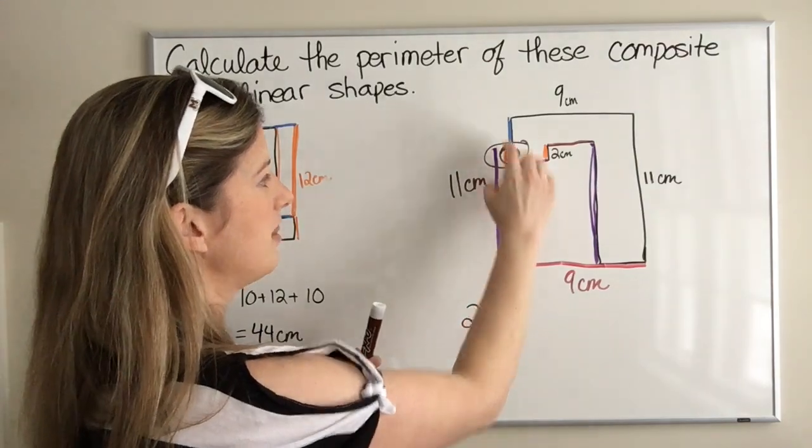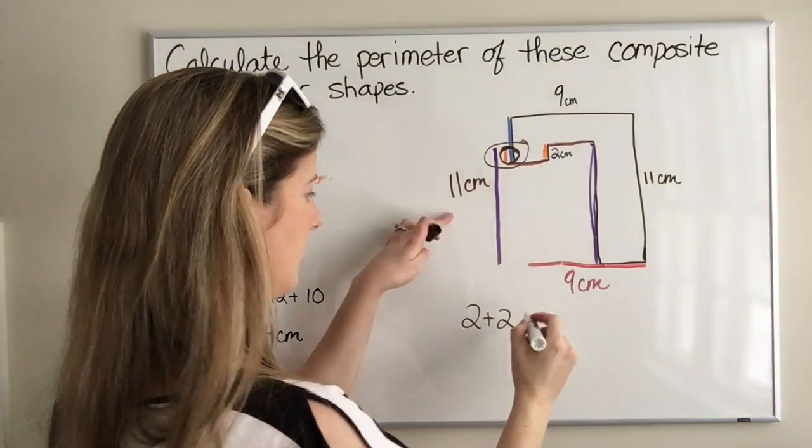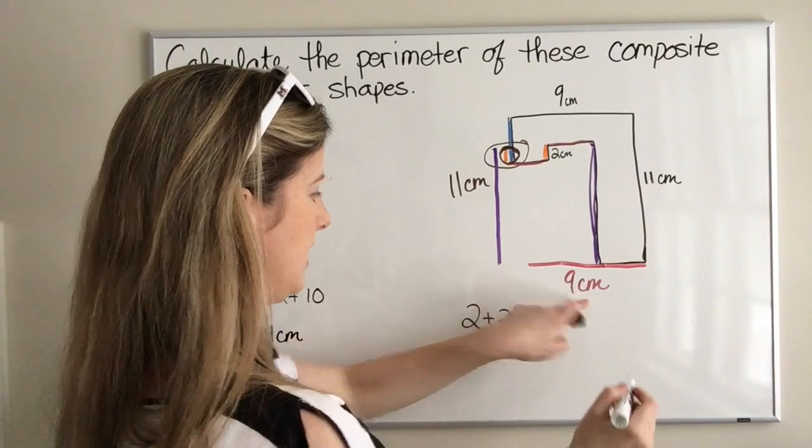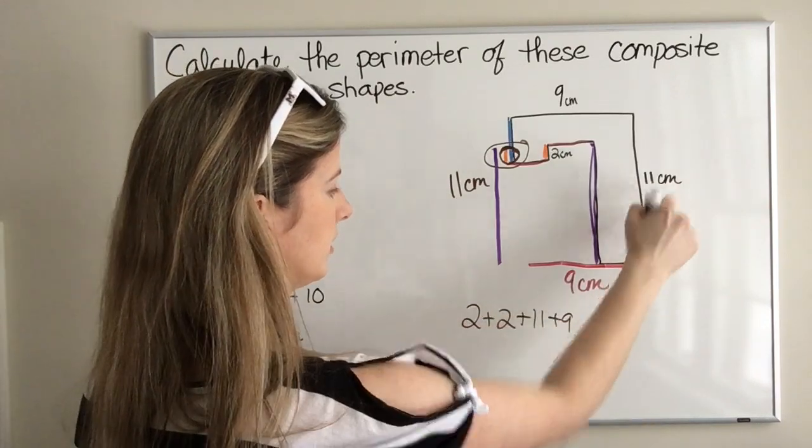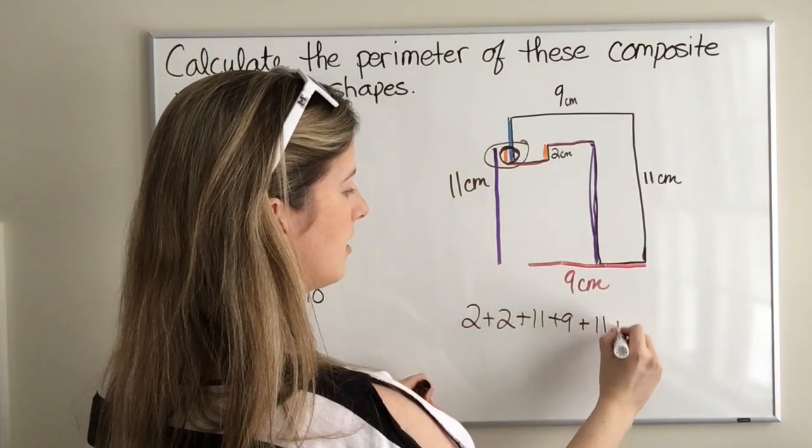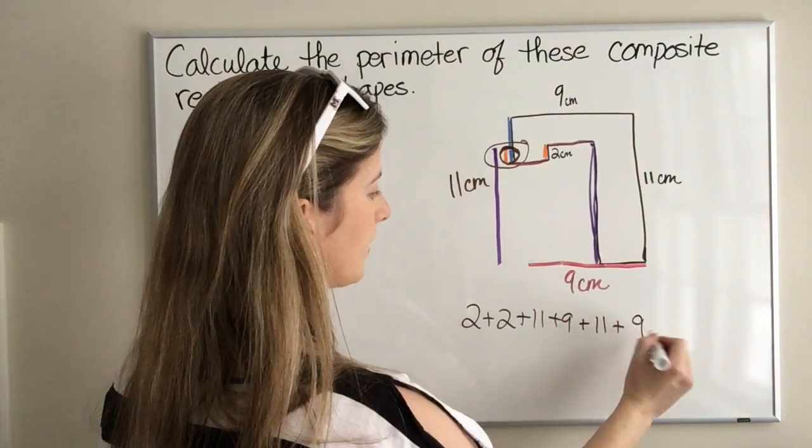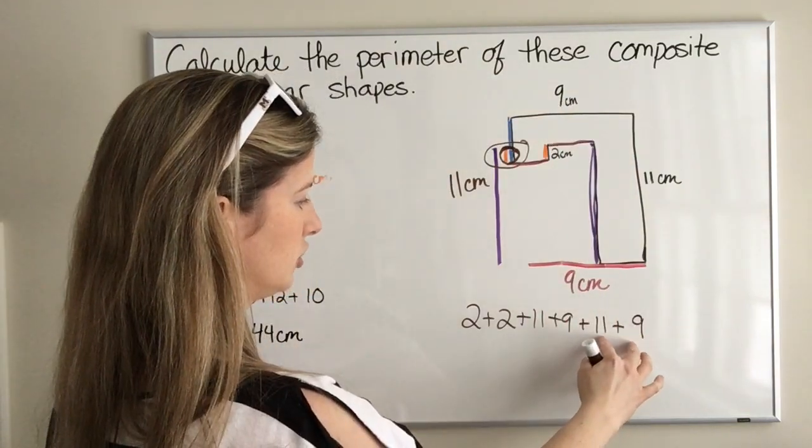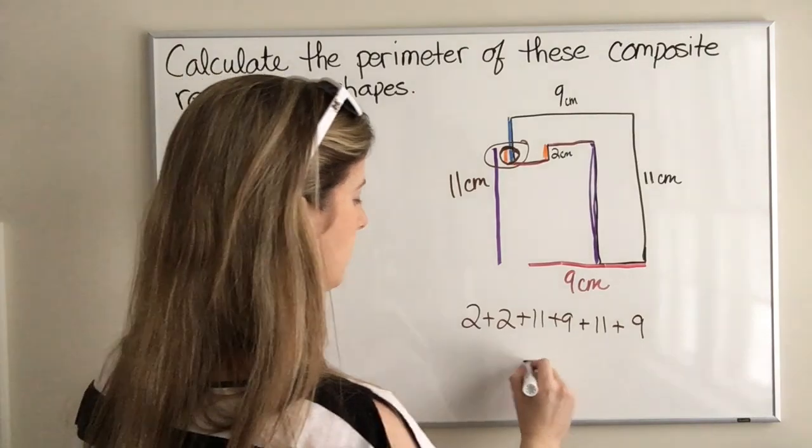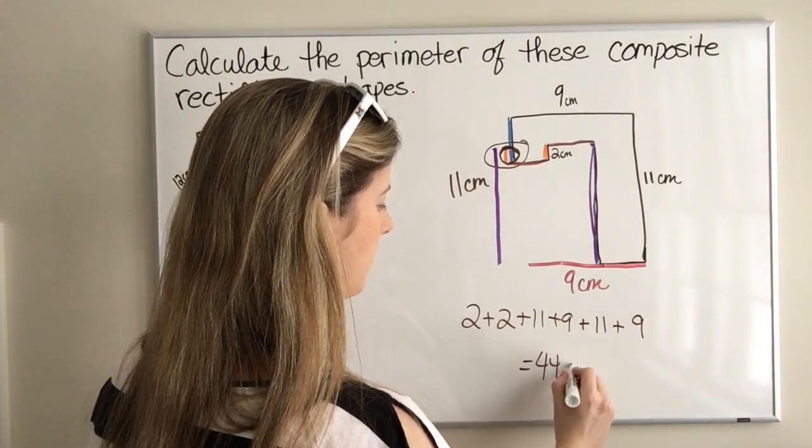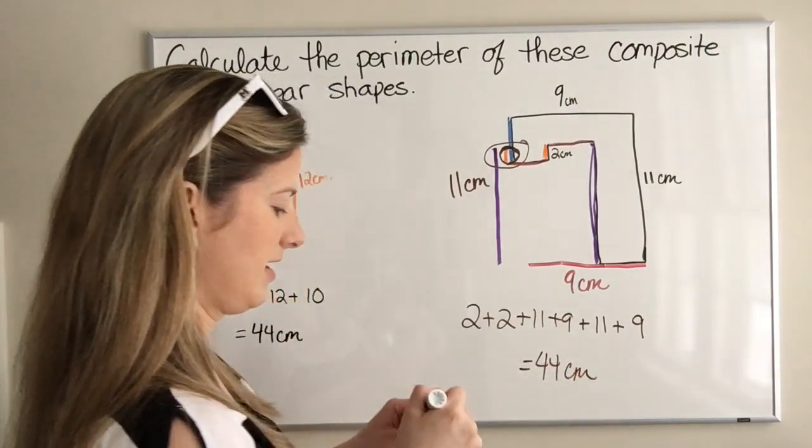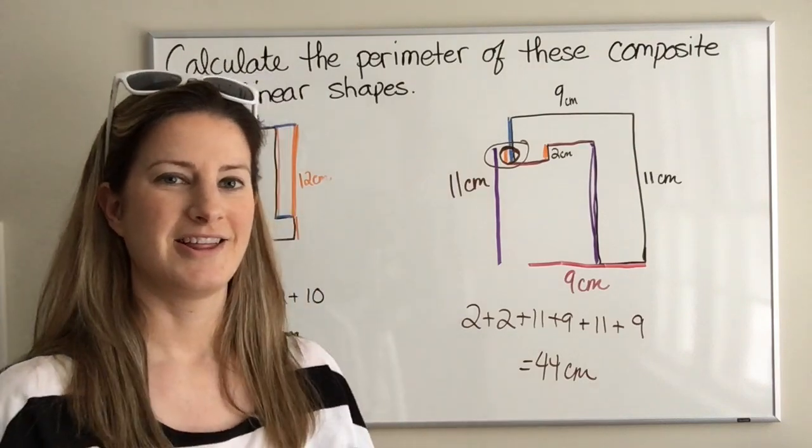Then plus 11 for this side plus 9 for this side plus 11 for that side and plus 9 for the top. So that's again going to be, so this is 20, 44. There you go.